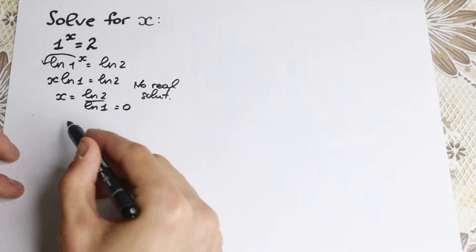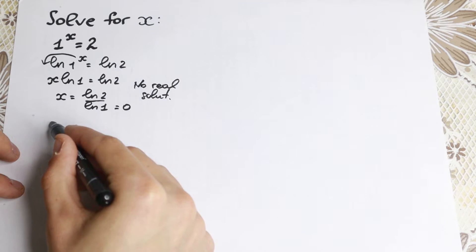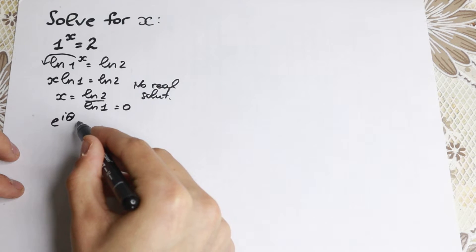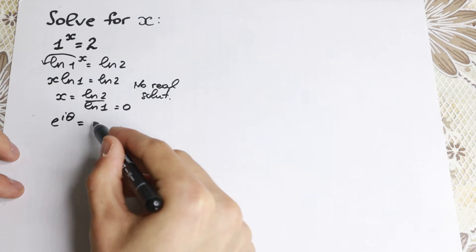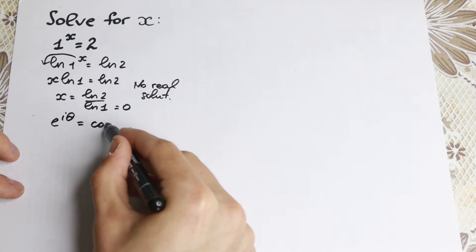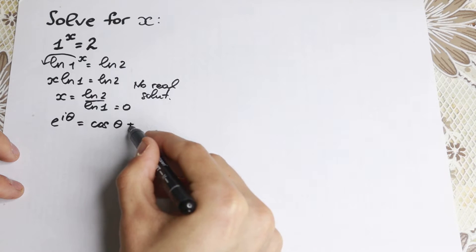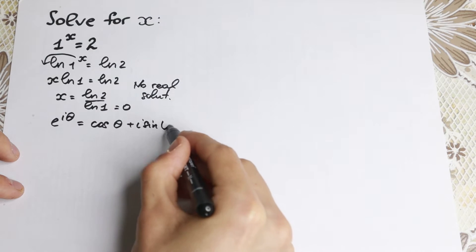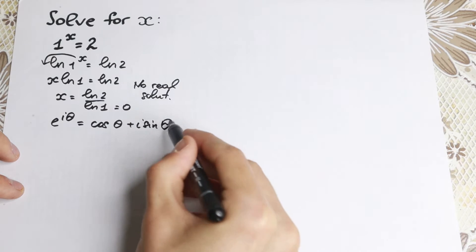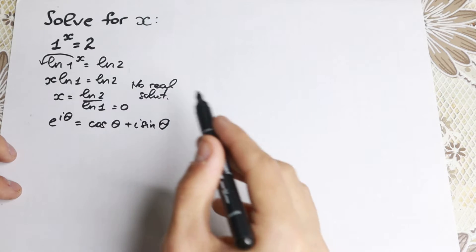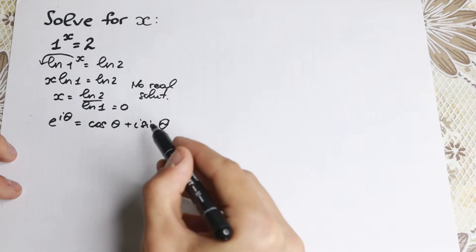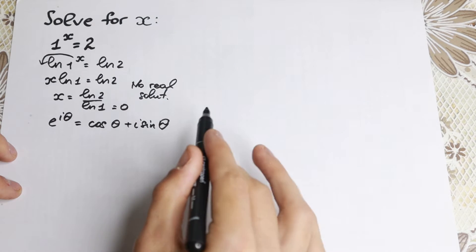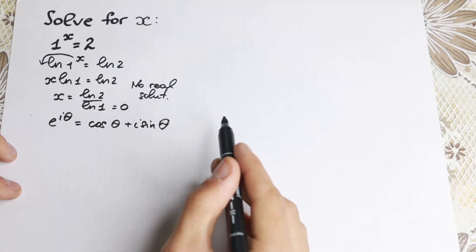First of all we need to know the formula: e to the power i times theta equals cosine theta plus i times sine theta. I hope you know this formula from complex numbers — it's a really popular formula, and I want to use it here.